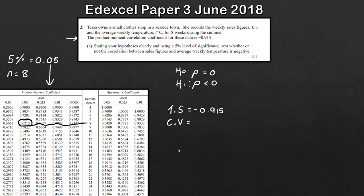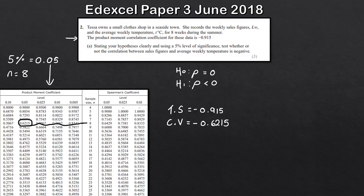You might wonder what to do here, because the table gives a positive value but our PMCC is negative. All we do is change our critical value to be negative as well — so it's minus 0.6215. Now we compare: our test statistic, minus 0.915, is less than our critical value of minus 0.6215.